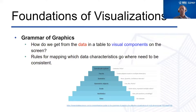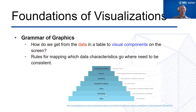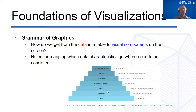The grammar of graphics follows a nice pyramid. We start with our raw data, then think about our aesthetics — what from the data are we mapping to the page? Which variable are we mapping to the x-axis, to the y-axis? Then what are the scales? We can't have just any old scale for axes, size, or shape. We need to specify how we distinguish between different values of our variables.